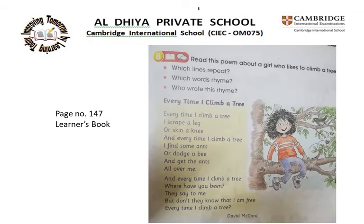Now on page number 147 of your learner's book, we will read a poem about a girl and what she likes to do. She likes to climb a tree. Read this poem about a girl who likes to climb a tree. We have three questions — we are going to read the poem and then answer these questions.